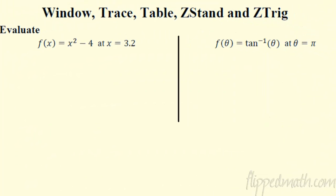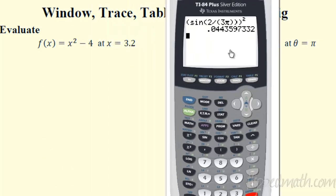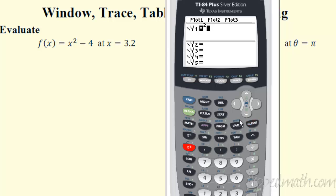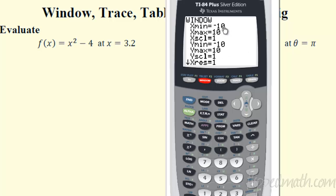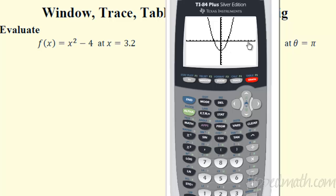Now let's look at window, trace, and other graph features. If I want to evaluate something, I can just plug it right in, but I'm going to graph it to show you some features. Let's graph x² − 4. Zoom standard gives you the basic window: x and y range from −10 to 10. That's what x max, x min, y max, y min all mean — you're showing 10 in every direction.